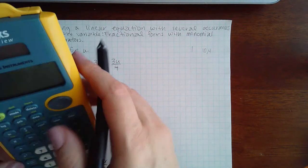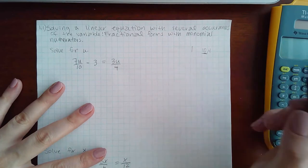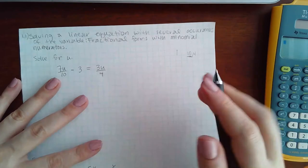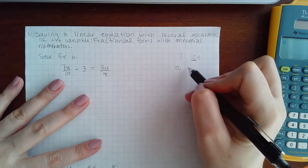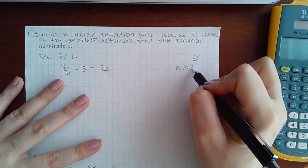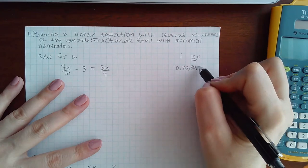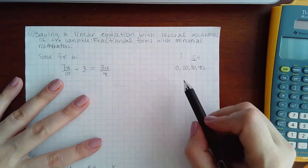The easiest way to find the common denominator is to take the larger number of your denominators and list its multiples. So for 10 times 1 is 10, 10 times 2 is 20, 10 times 3 is 30, 10 times 4 is 40, and so on and so forth.